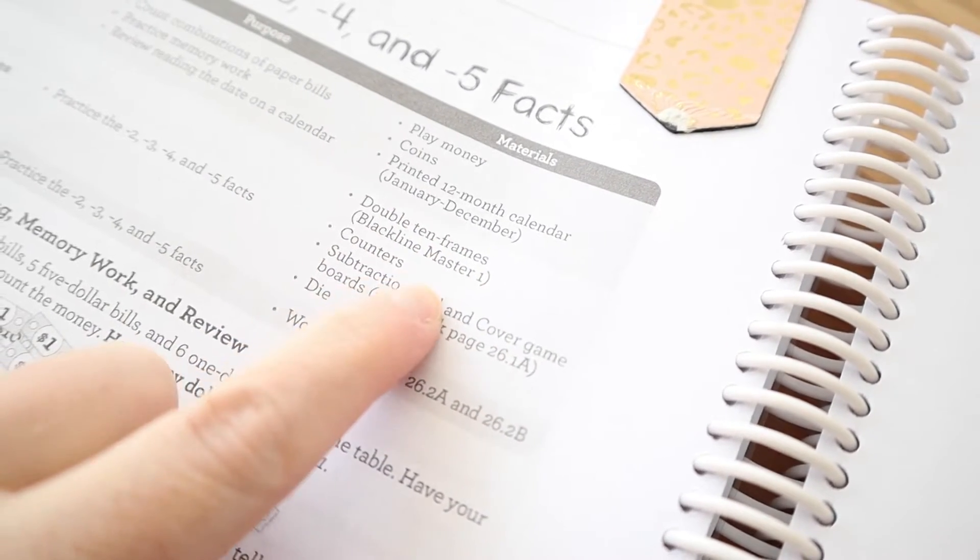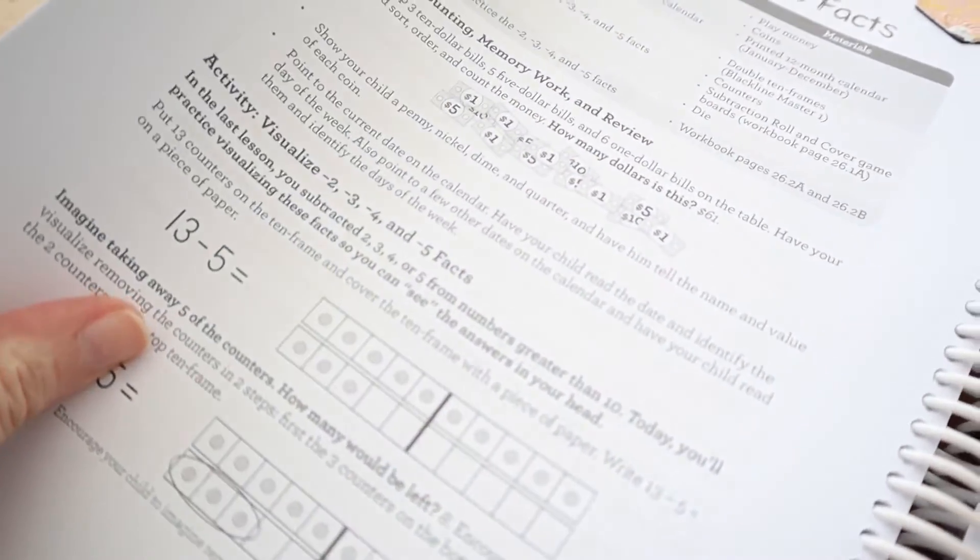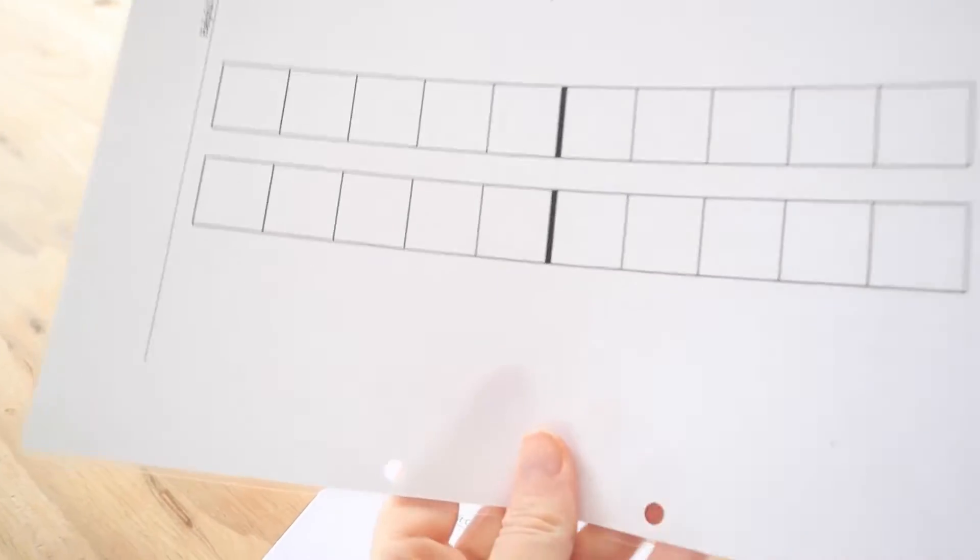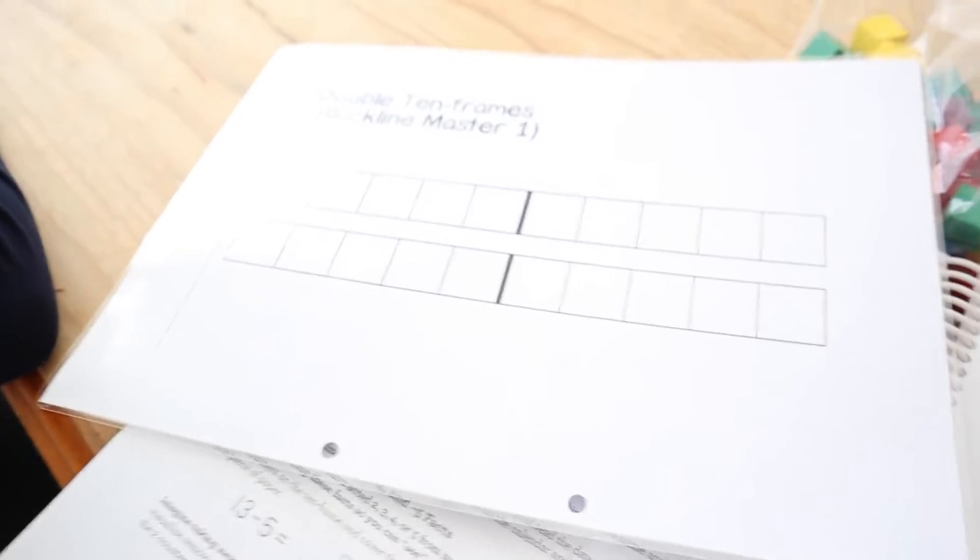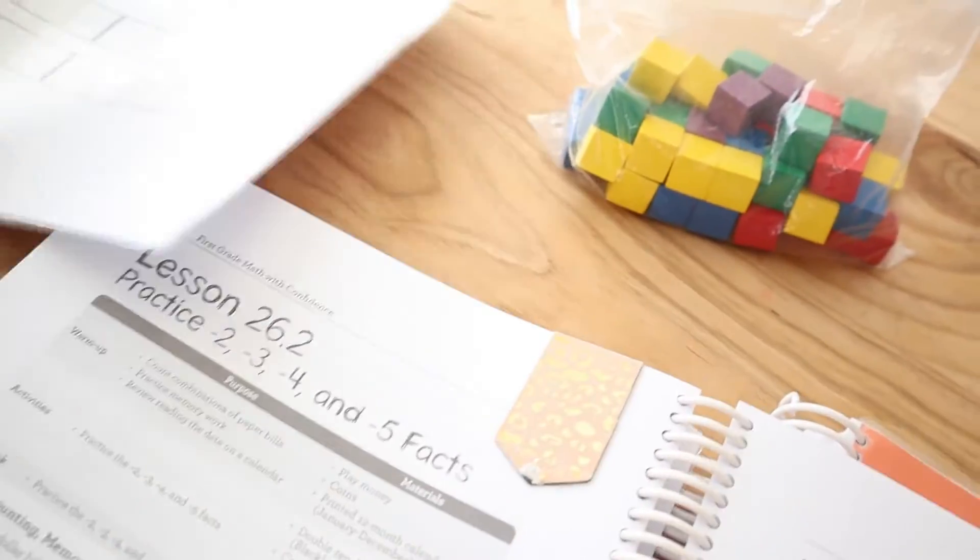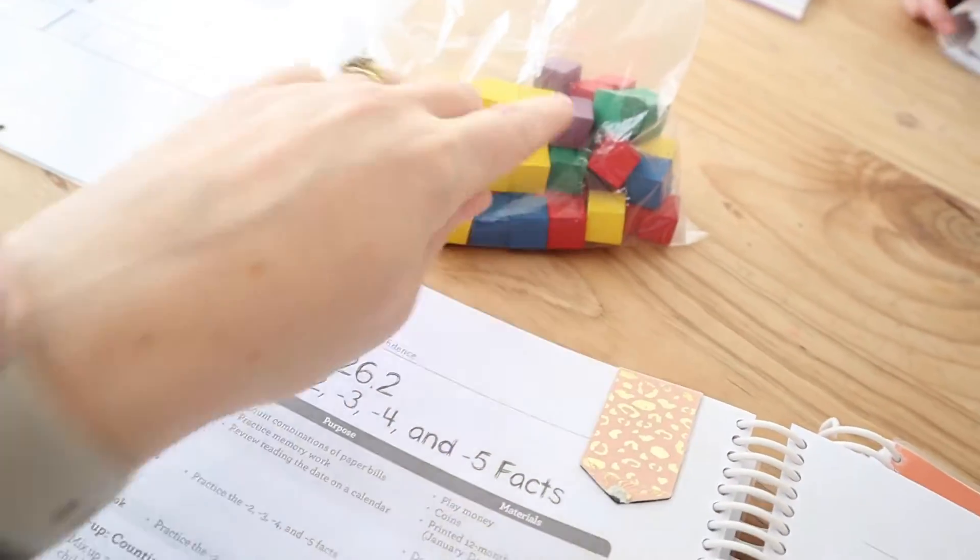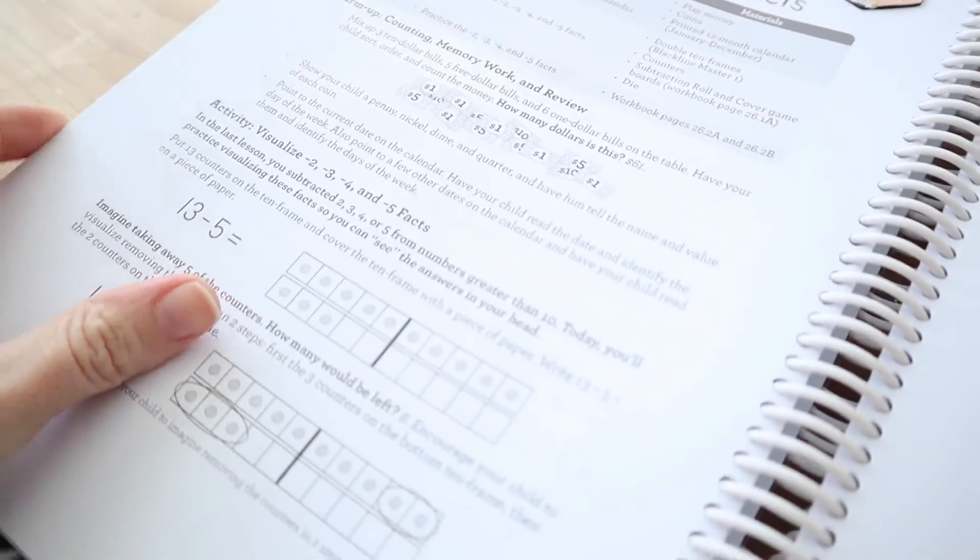So we're not necessarily going to do the warm up today, but this tells us what we do need. Double 10 frames and counters. Annie, could you grab the colorful counters out of there, please? And I'll grab the 10 frame. Okay, so we have our things. This is the Double 10 frame master. It's from the Blackline Masters. And I just laminated the things that I knew would use a lot, which is this. This was actually from the second grade one. So a lot of them like overlap, which is really helpful. And then we've got our counters there. These are from the old good and beautiful math. I just hung on to the old manipulatives and we've used them a lot. So let's hop into the lesson.